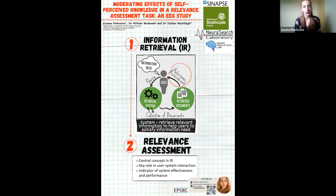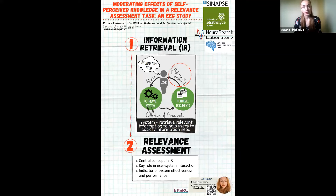Let's say that the first two documents are irrelevant, so the user would skip them because they are non-relevant, but then the user would find the third document to be relevant because it answers the information need. What the user is doing by interacting with the relevant documents and skipping the non-relevant documents is called the Relevance Assessment.